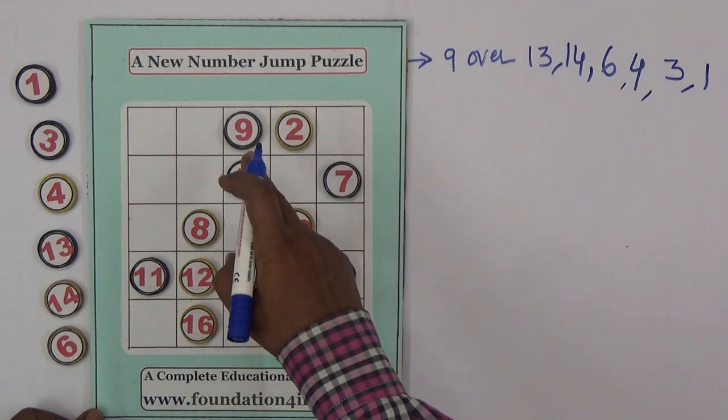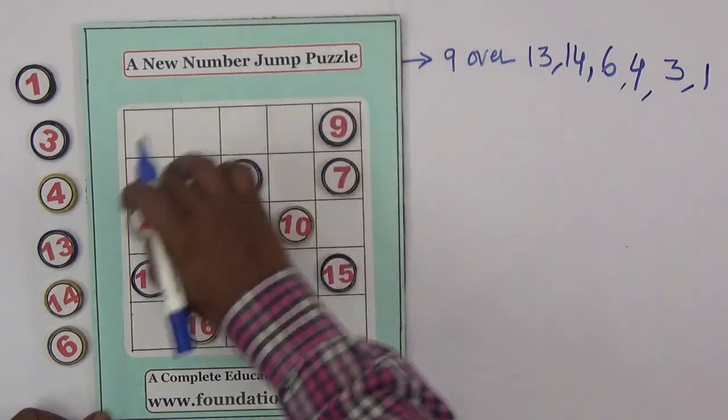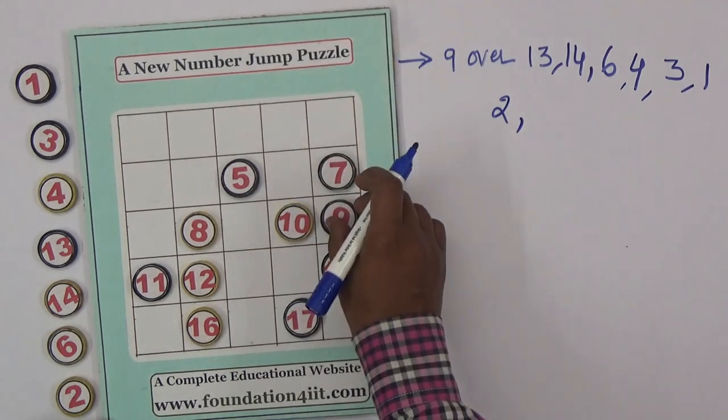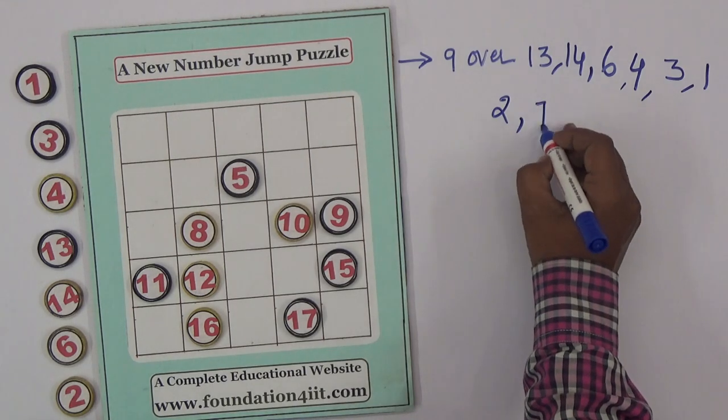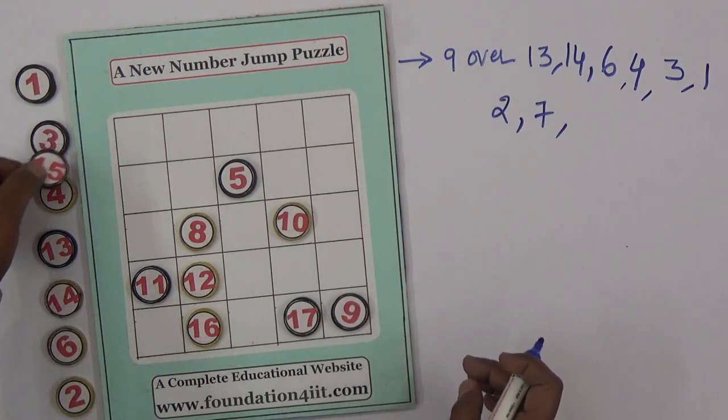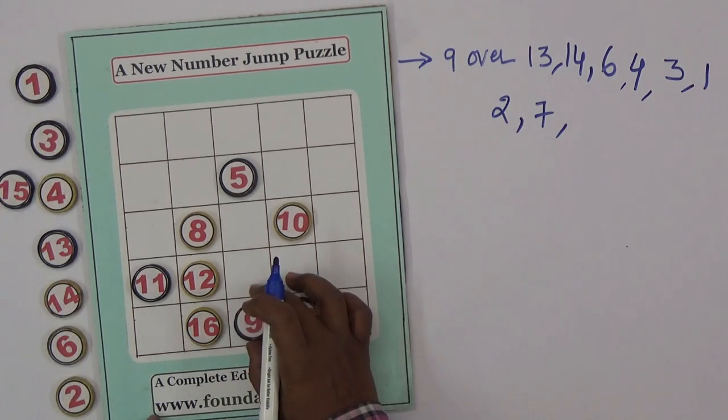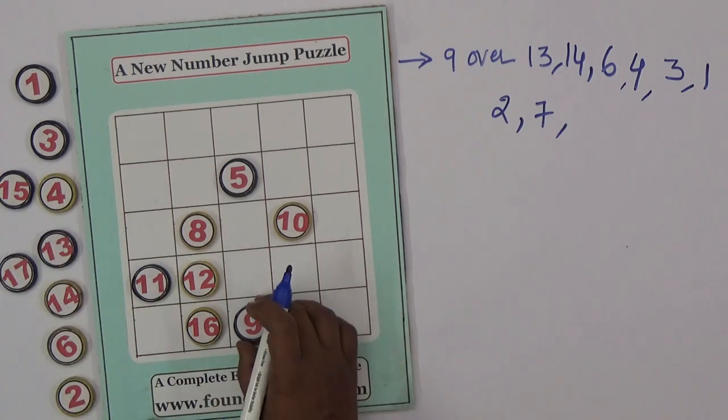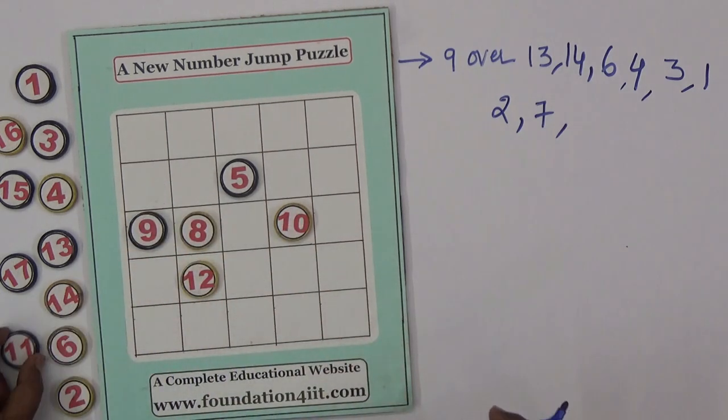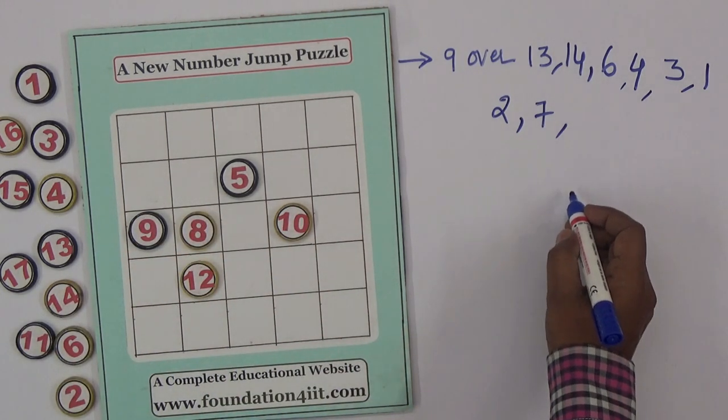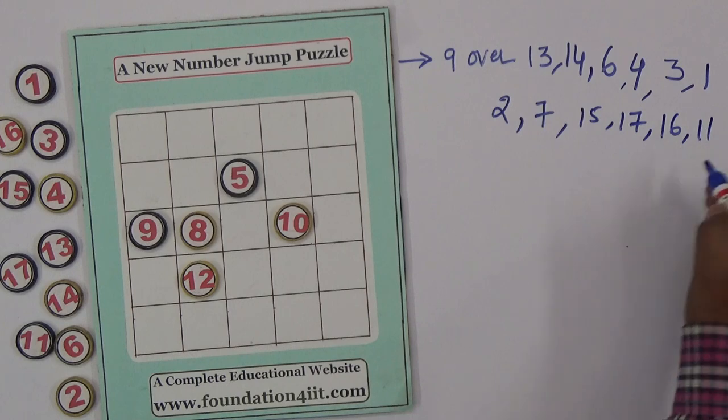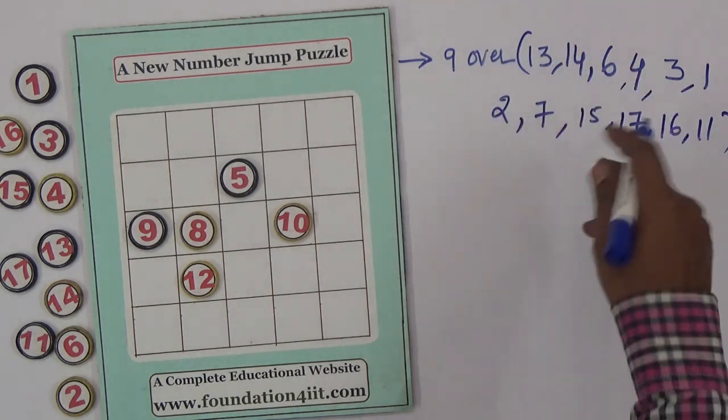So you can take out 9 over 1. Same 9 next over 2. 9 over 7 next. Then followed by 15, 17. Again 16, then 11, 10. After 7, again I took 15, 17, 16, and 11. Now this complete is one set. So 9 over one by one I took. Now this one set, now next.